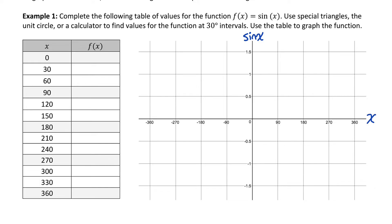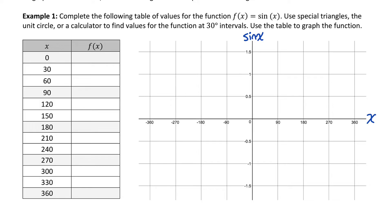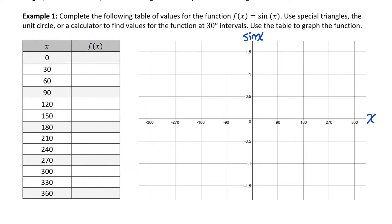We'll pick a bunch of angles to get sine ratios for, so we can plot points on this graph and see what the sine function looks like. This sine function is actually a periodic function with a pattern of y values that repeats over and over again. These x values will give us one cycle of this periodic function. To calculate these y values, I need to find the sine ratio of each angle using special triangles, the unit circle, or a calculator — just make sure your calculator is in degree mode.